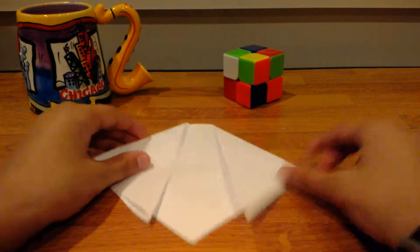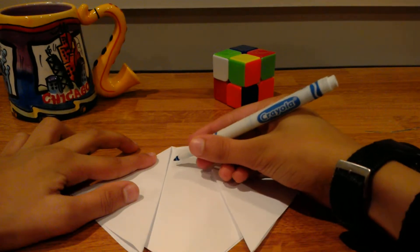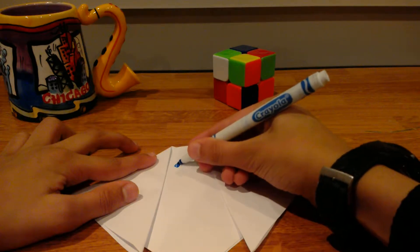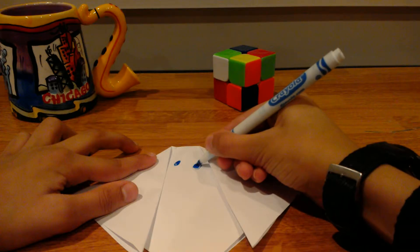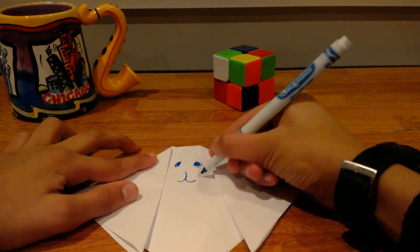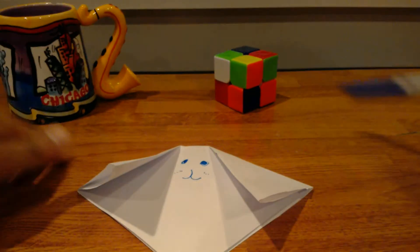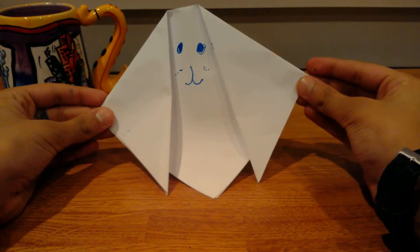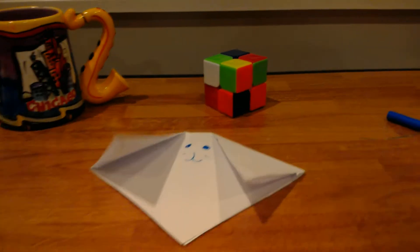And now basically you have the puppy. All you have to do now is draw some eyes. This is a really bad drawing, but it will do for now. And there you have a puppy.